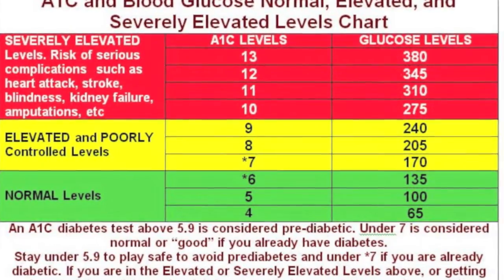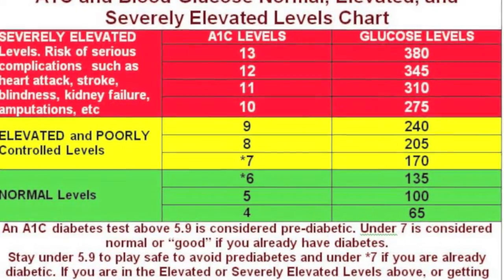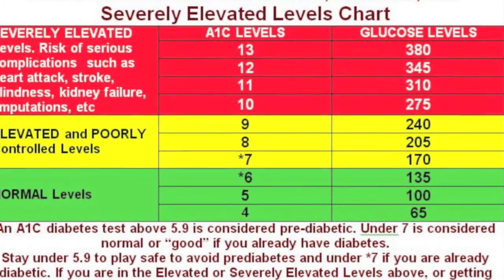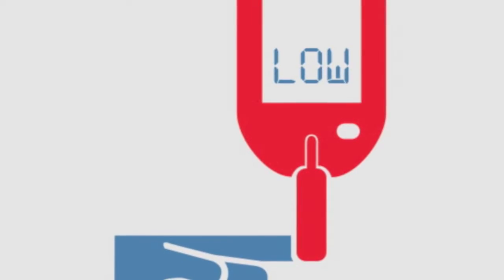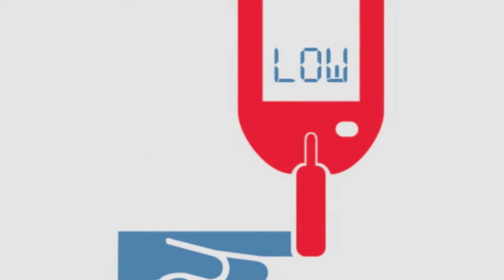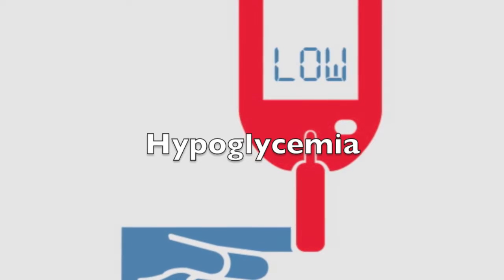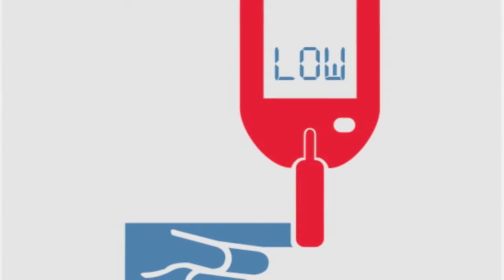There are certain high and low ranges that blood sugar cannot be in, otherwise it gets unhealthy for the body. A blood sugar level that is too low is known as hypoglycemia. Hypoglycemia results in a variety of symptoms.